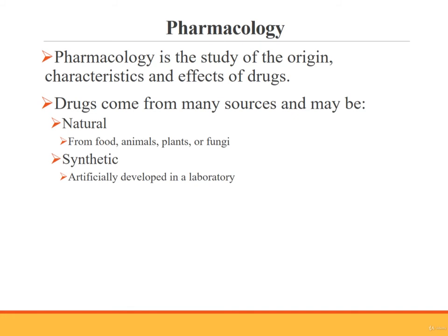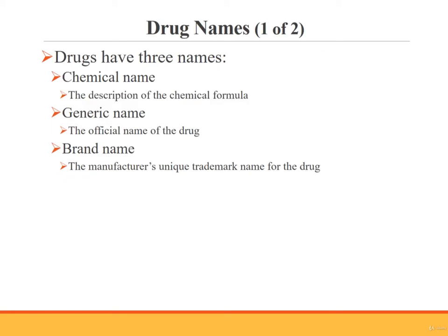Let's conclude this lecture with a discussion of pharmacology, which is the study of the origin, characteristics, and effects of drugs. Drugs are obtained from many different sources — some are found naturally in the foods we eat, while others are obtained from animals. Plants, fungi, and molds are other natural sources of medicines. Many synthetic medicines are also used today; synthetic drugs have been developed by artificial means in a laboratory. Whether natural or synthetic, all drugs are chemicals.